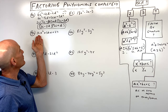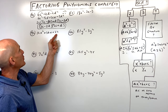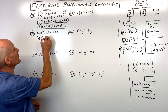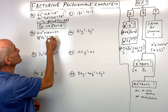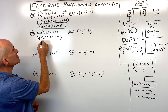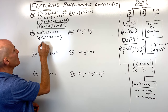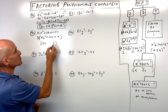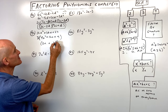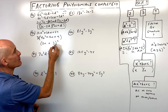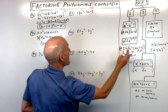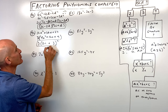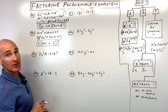Number forty-two is a trinomial where we can factor out a 3. That gives 3 times 4x squared plus 12x plus 9. Notice the first term is a perfect square — 2x times 2x — and the last term is a perfect square — 3 times 3. Then 2x times 3 is 6x, doubled is 12x, matching the middle term. So 4x squared plus 12x plus 9 is 2x plus 3 quantity squared. Bring down the 3 for the fully factored form.